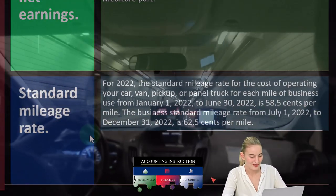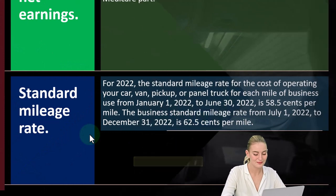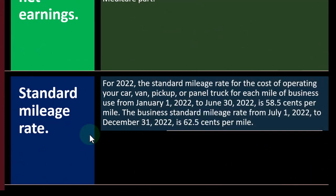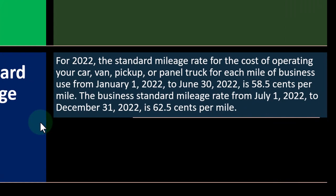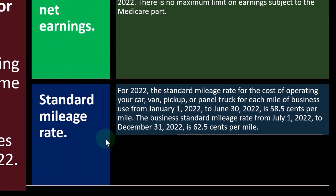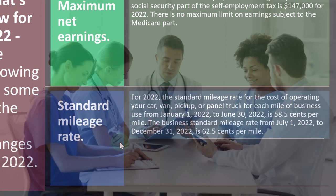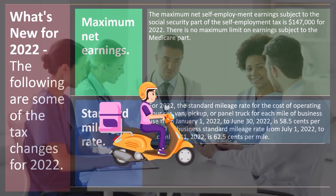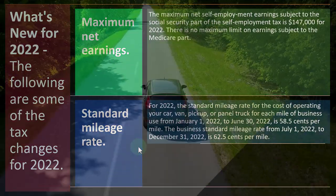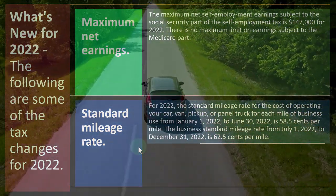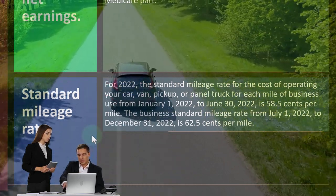Then we've got the standard mileage rate. For 2022, the standard mileage rate for the cost of operating your car, van, pickup, or panel truck for each mile of business use from January 1st, 2022 to June 30th, 2022 is 58.5 cents per mile. When we use this mileage rate, you might think it's the same for any purpose it might be applied, such as for medical use on a Schedule A and for charity. But they're not always the same. We're talking about the standard mileage rate as it relates to Schedule C, where you have the option of taking actual deductions related to your car use for business or the mileage rate. They're pretty good about increasing and updating this rate each year.